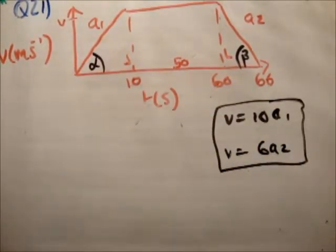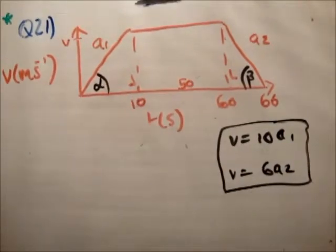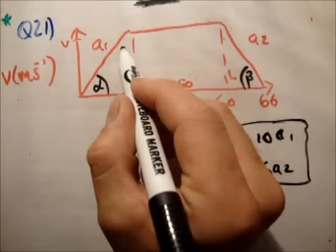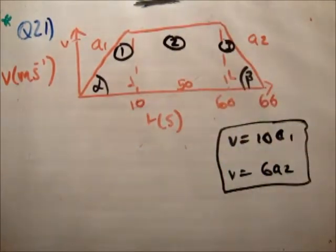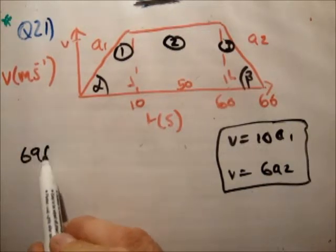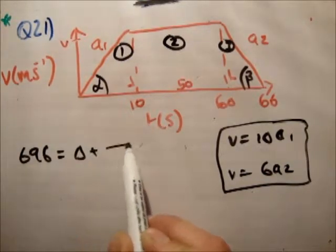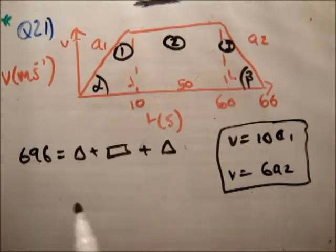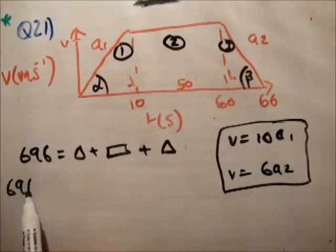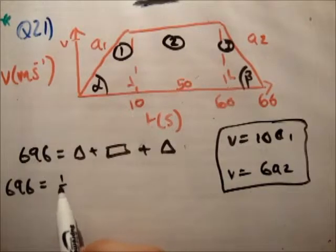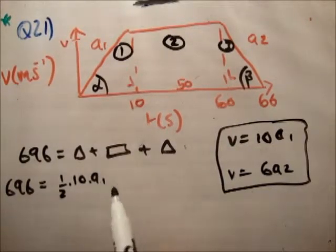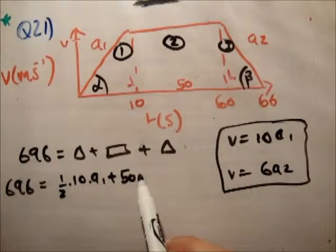Next, we're going to get the area, because we know what the total area is at 696. So that is, the area is the distance. So we're going to add up 1 plus 2 plus 3. So 696 is equal to triangle plus rectangle plus triangle. So 696 is equal to half 10, which is the base, times A1, plus the base, which is 50 times V.